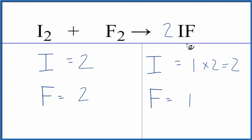This two, it applies to everything here. So we have one times two, that'll give us two fluorines, and now everything's the same on both sides, and this equation is balanced.